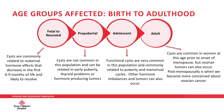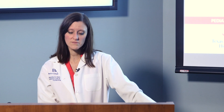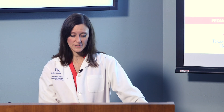In the adolescent age group, functional cysts are quite common and are typically related to puberty and menstrual cycles. Other hormone imbalances and tumors can also occur during this time frame, so we want to sort out the functional cyst from the non-functional cyst. In adult women, cysts are also quite common prior to the onset of menopause, but ovarian tumors can occur as well. When we see a cyst or any abnormality of the ovary in the postmenopausal woman, we are more concerned about ovarian cancer.